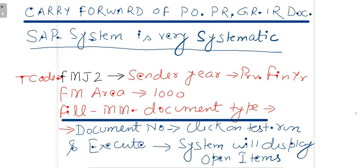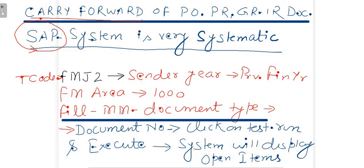Hello all, welcome. In this SAP tutorial, today our discussion topic is how to carry forward purchase orders, purchase requisitions, GRIR documents, or any service entry sheet in SAP. Carry forwarding means the budget of the respective MM document is carried forward into the current financial year, so you can utilize those previous year budgets and access those documents to make any changes if required.